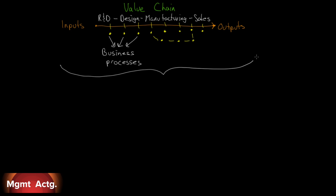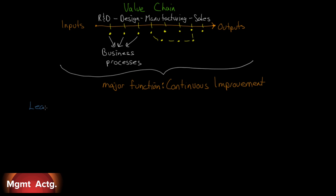Every process in the value chain has its own set of costs that have to be analyzed and managed, and they all have to be brought together throughout the whole value chain. The major function of management at the lower levels is continuous improvement in this value chain — how do we do it better, faster, cut costs without cutting quality, increase quality without increasing costs, increase service?